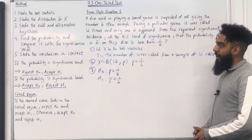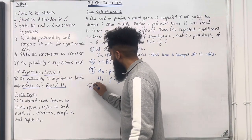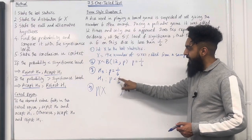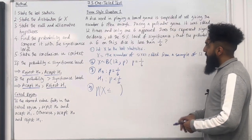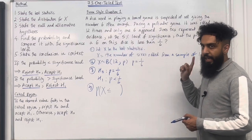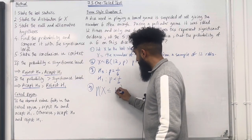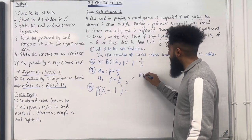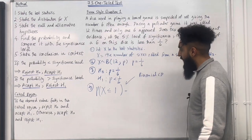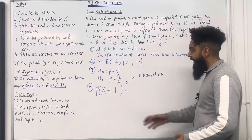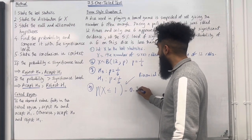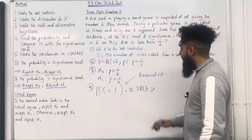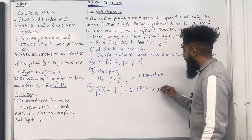Step 4: find the probability and compare it with the significance level. We go back to the inequality in H1 — it says less than — so we put less than or equal to. From a sample of 12 rolls, only 1 six appeared, so the observed value is 1. We calculate the probability X is less than or equal to 1 using the binomial CD function in our calculator, giving 0.3813.